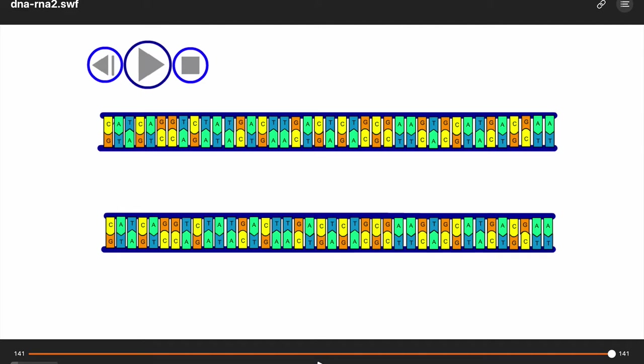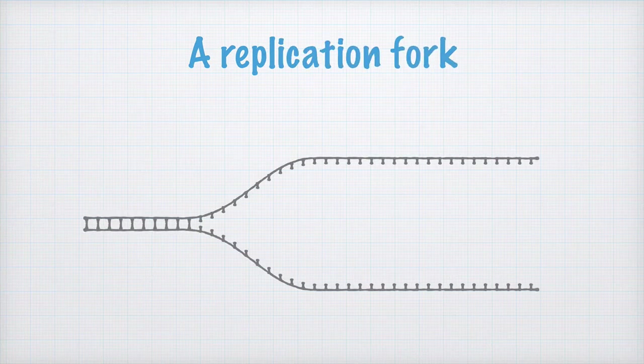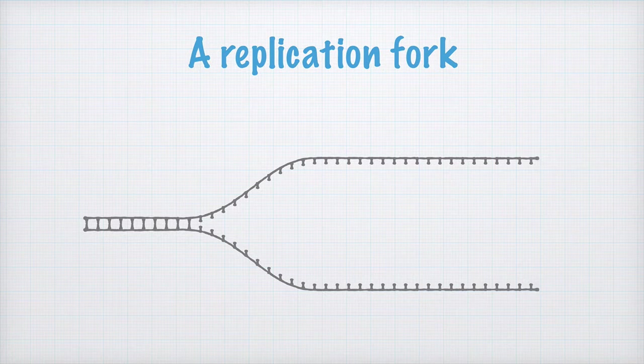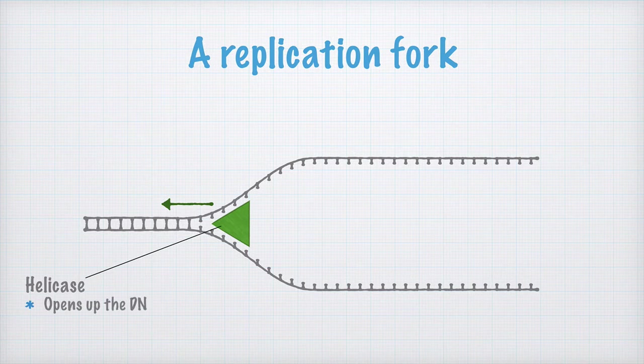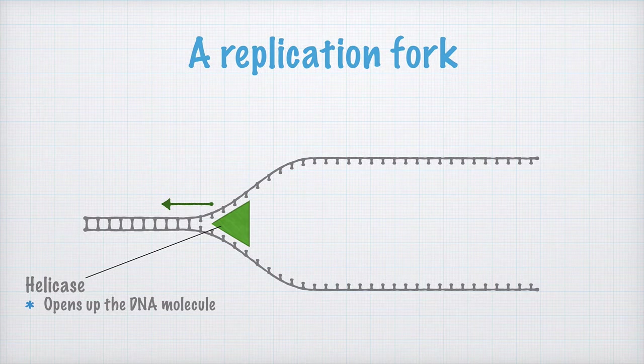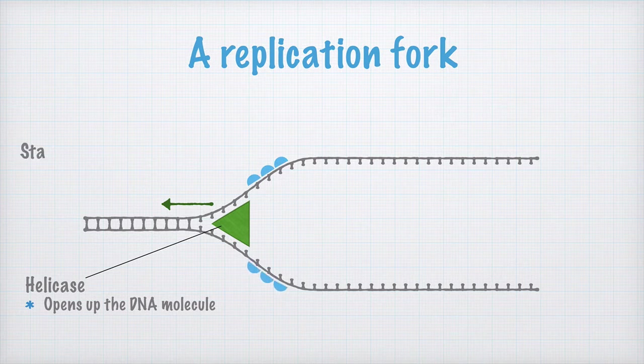Now, turn to a new page in your notes, and we'll draw what's called a replication fork. We start by drawing some double-stranded DNA here, which is separated into two single strands. This process is carried out by a protein called a helicase, which you perhaps remember opens up the DNA molecule somewhat like a zipper. I prefer to draw my helicase as a triangle. We also add some stabilizing proteins here. They prevent the two single strands from sticking to each other again.